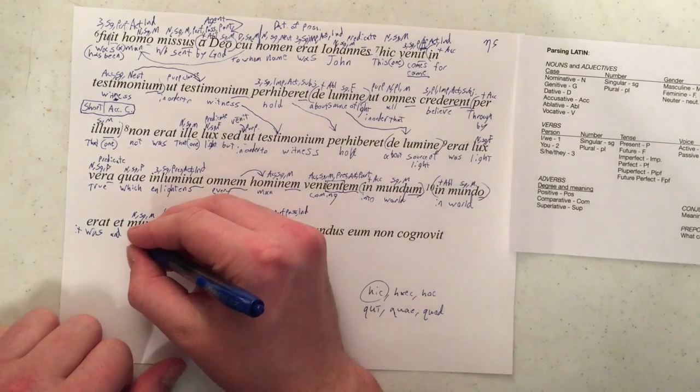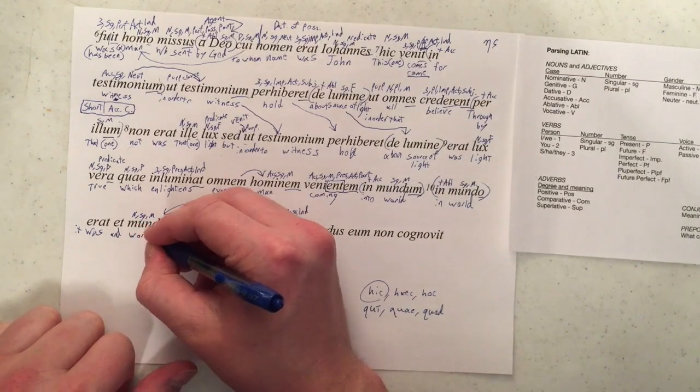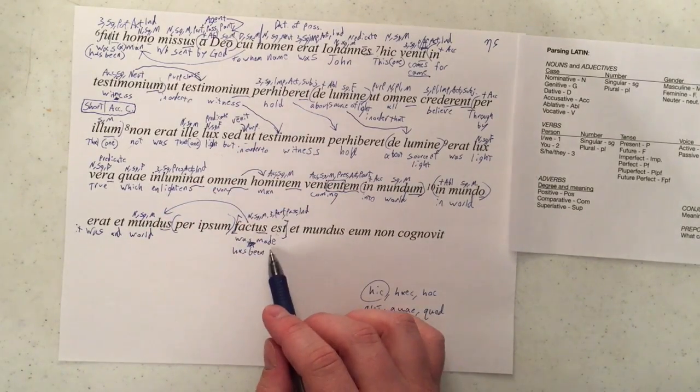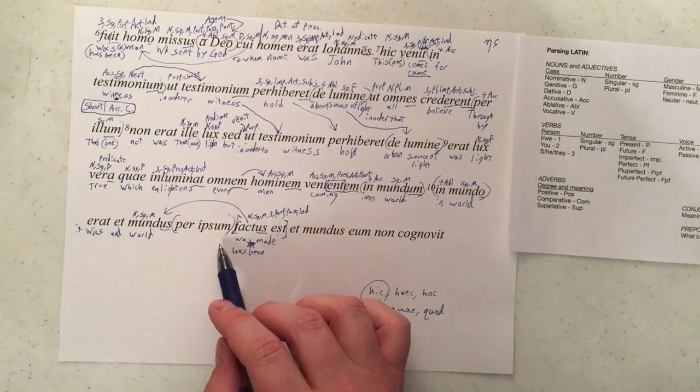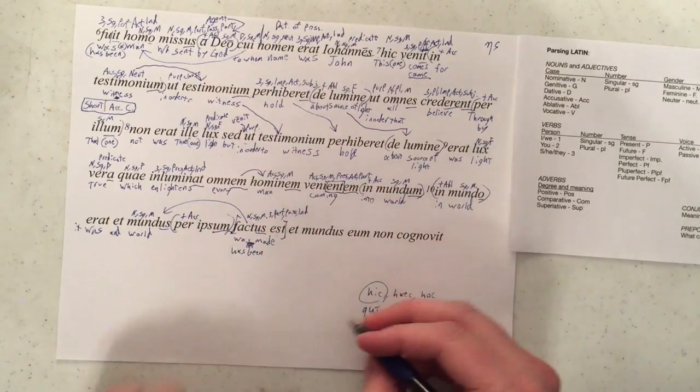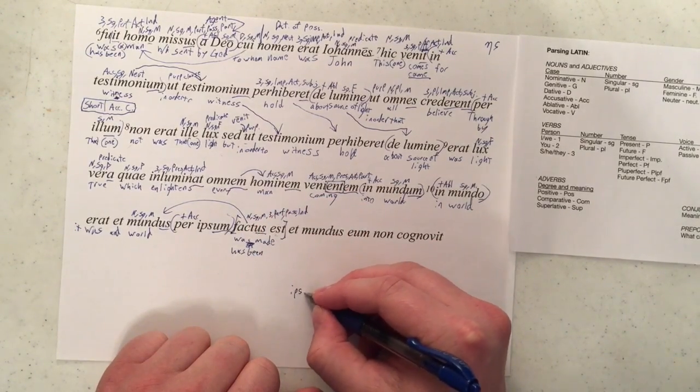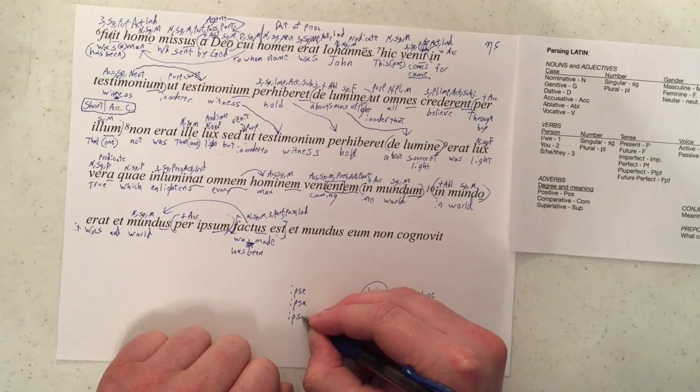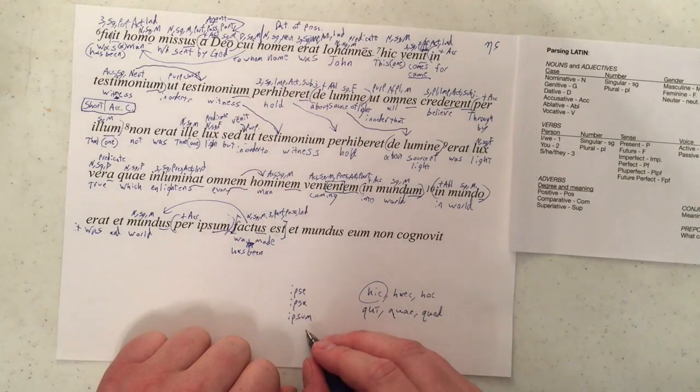All right, so, and the world. Sorry, just world, no articles in Latin. And world was made, or has been made, per ipsum. Per is going to take the accusative case, take a look at ipsum from ipsae, ipsa, ipsum.